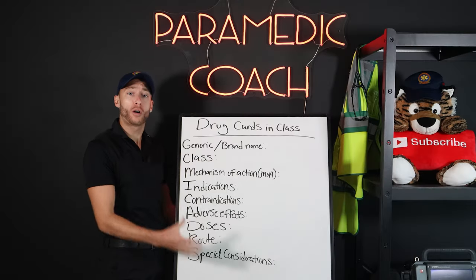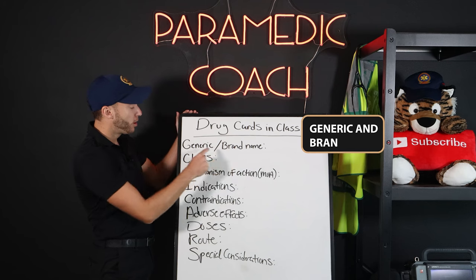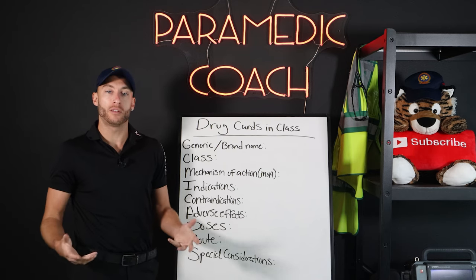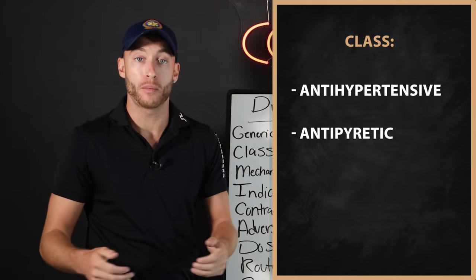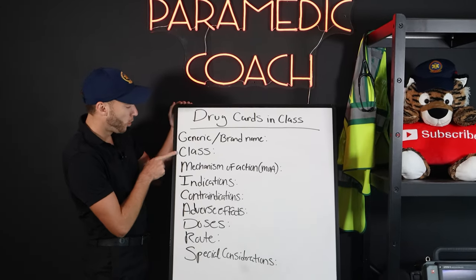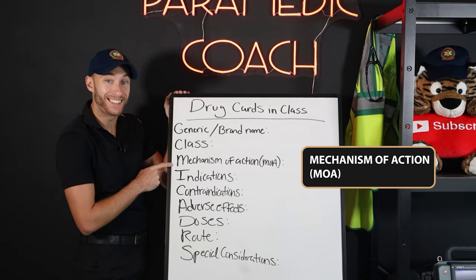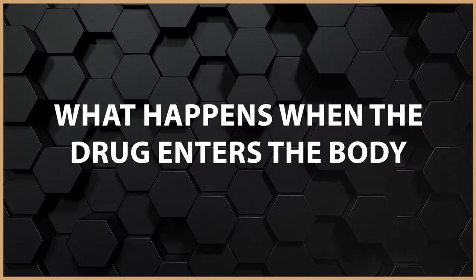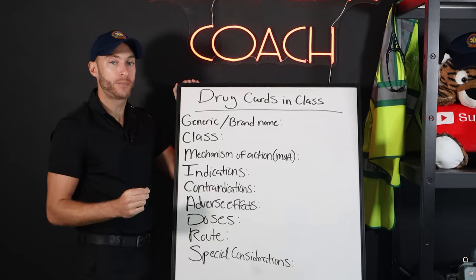This right here is what a drug card looks like. When you're filling your drug cards in paramedic school, this is what they look like. We start with generic and brand name, then the class. The class means essentially what the drug does — for example, antihypertensive, antipyretic, or sympathomimetic. Mechanism of action is what the drug does when it enters the body — how does the drug have its effect? The MOA is so important.